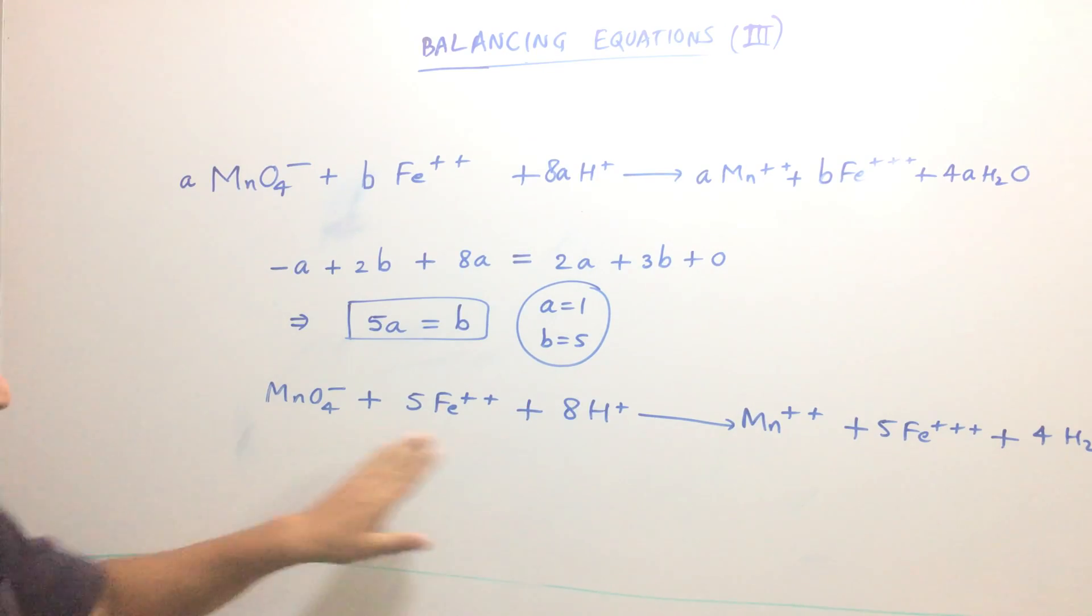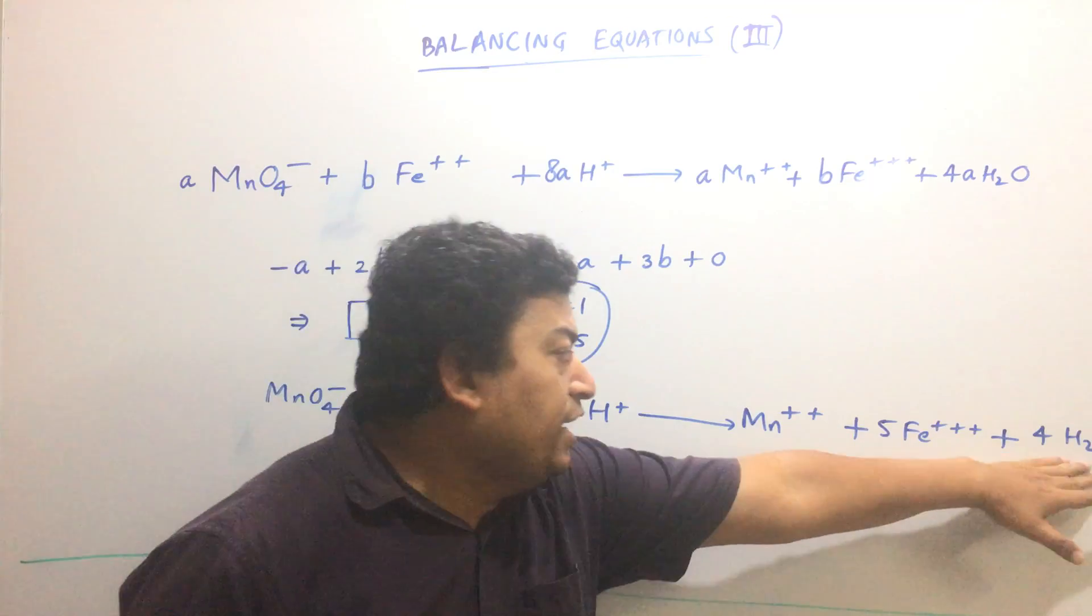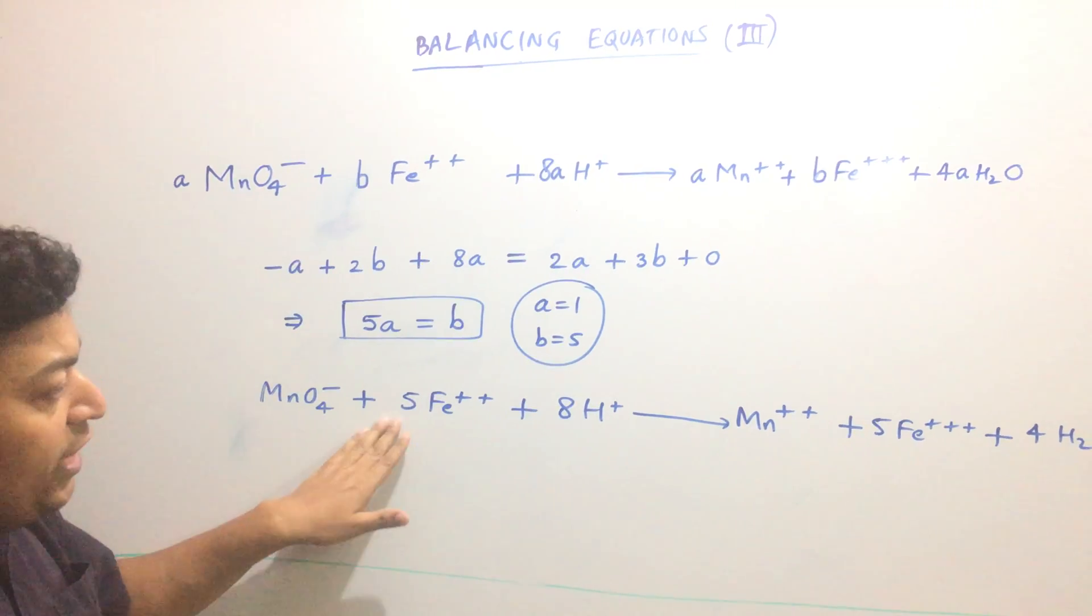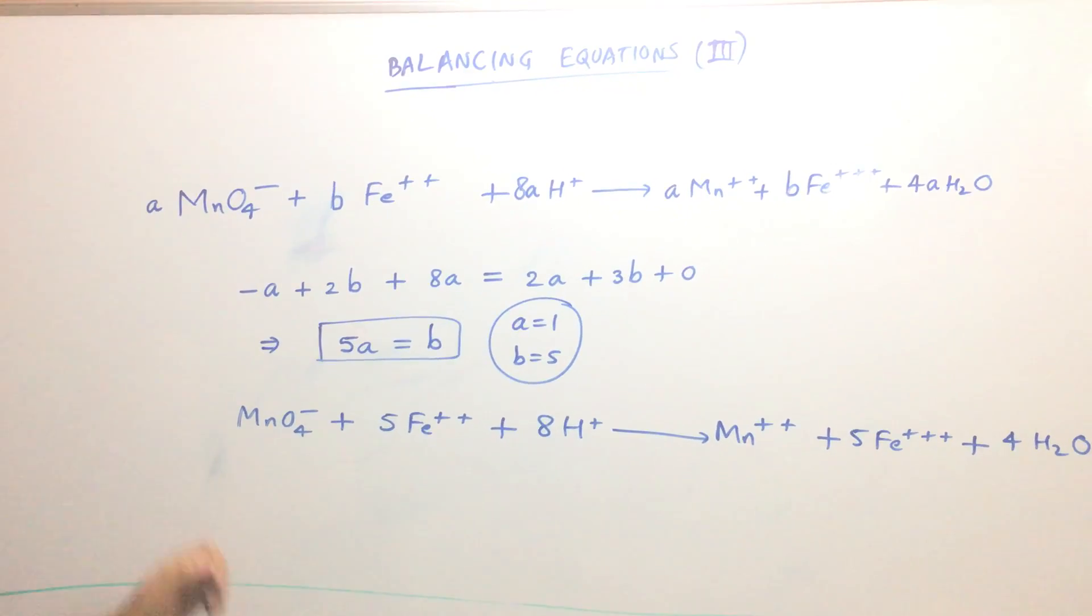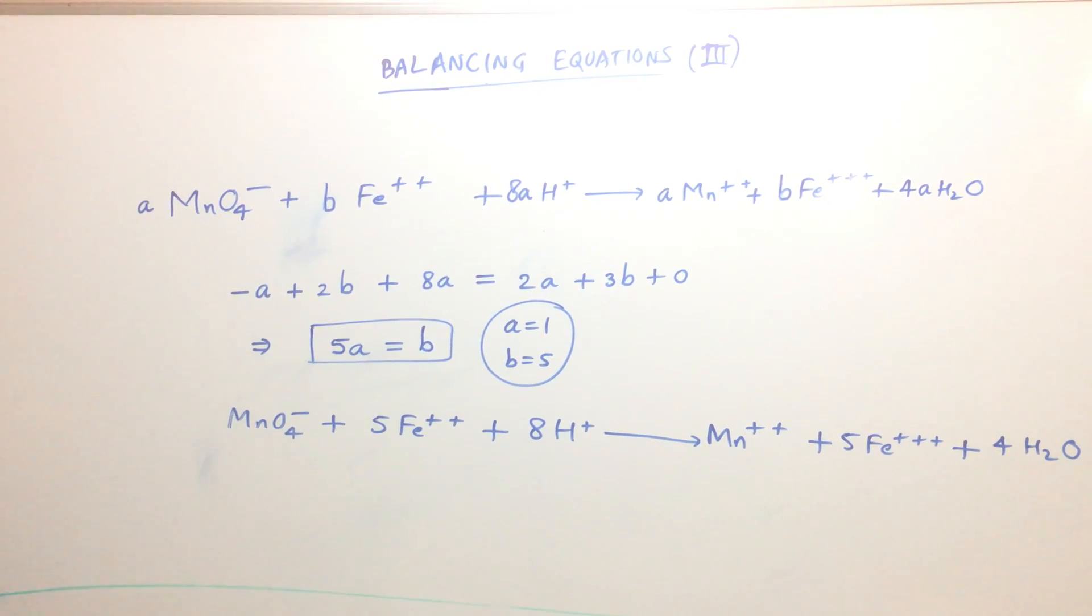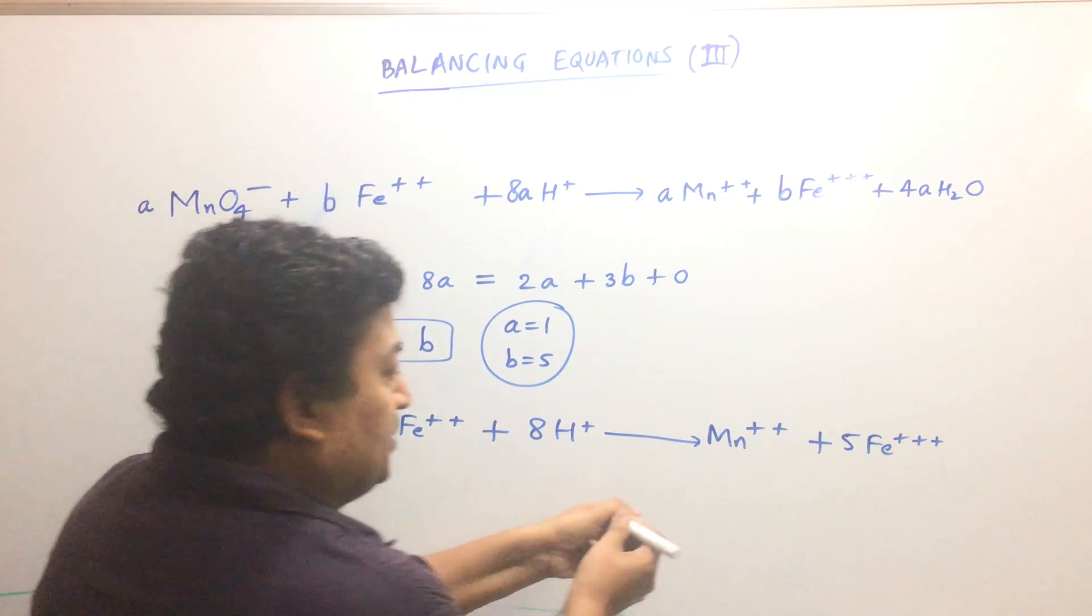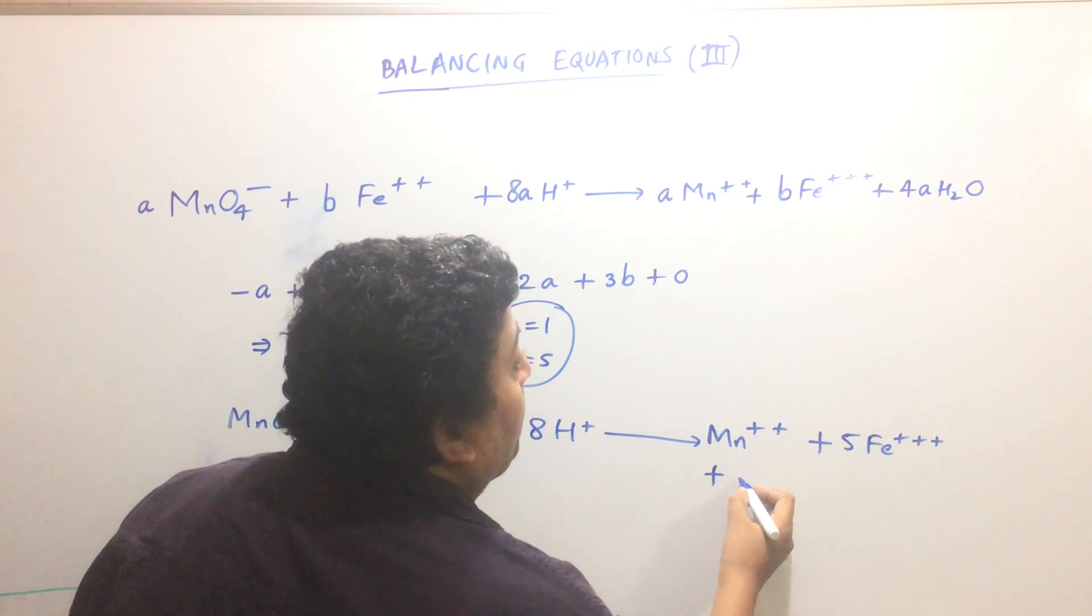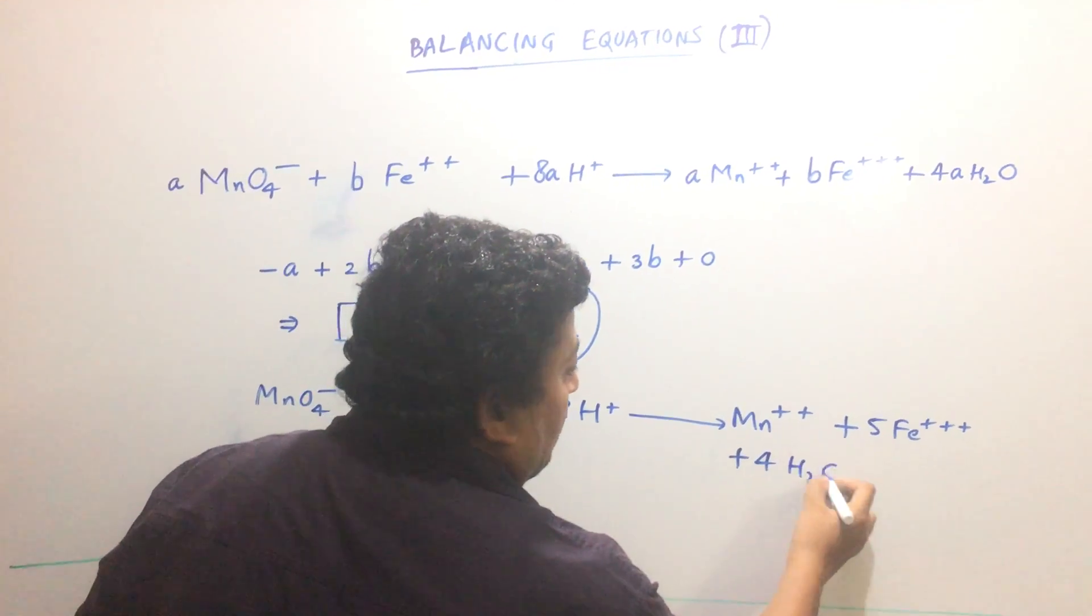This side: 1 Mn, 1 Mn. 4 Oxygen, 4 Oxygen. 8 Hydrogen, 8 Hydrogen. And 5 and 5 Iron atoms. I'm sorry, I think I wrote this a little bit off, so I will write it here. Plus A which is 1, so 4H2O.